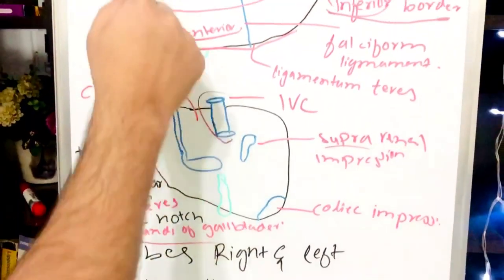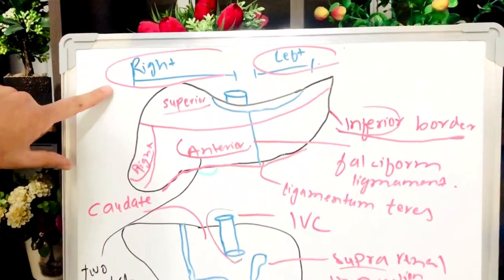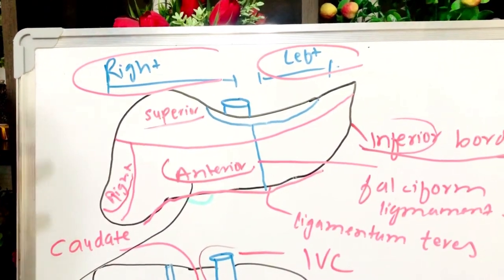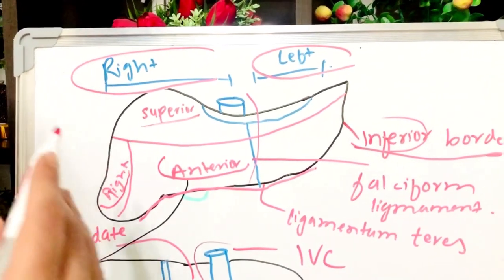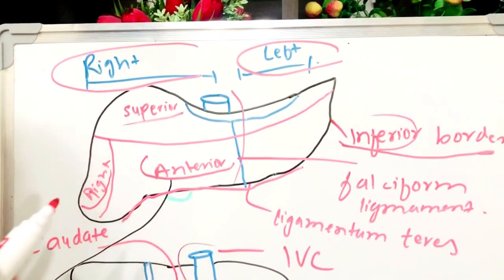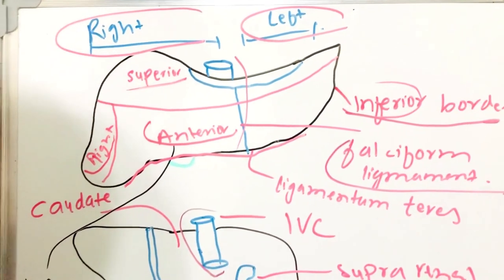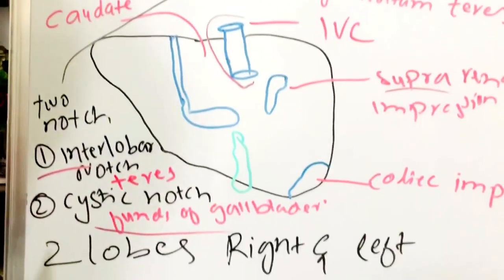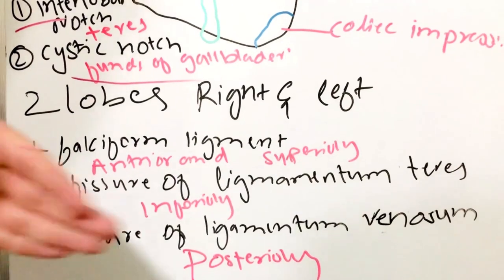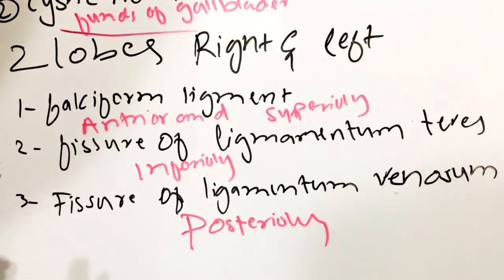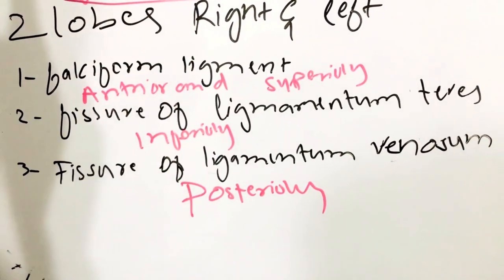The liver is divided into two lobes: the right lobe and the left lobe. The right lobe is greater in size — almost 80 to 85 percent of the liver. The right and left sides of the liver are divided by the falciform ligament anteriorly and superiorly. The fissure of ligamentum venosum is present inferiorly, and the fissure of ligamentum venosum is also present posteriorly.